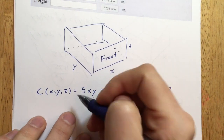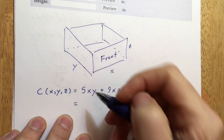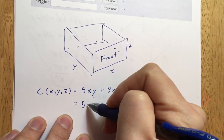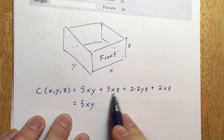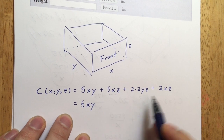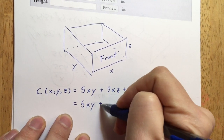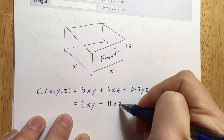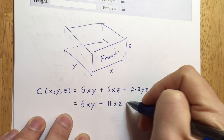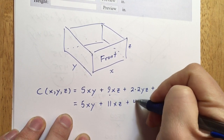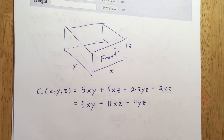Let's simplify the cost function. There are no like terms for 5XY. We do have like terms for the XZ parts: 9XZ and 2XZ combine to give 11XZ. So the full cost function is C(X, Y, Z) = 5XY + 11XZ + 4YZ.